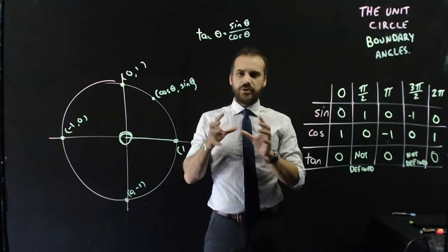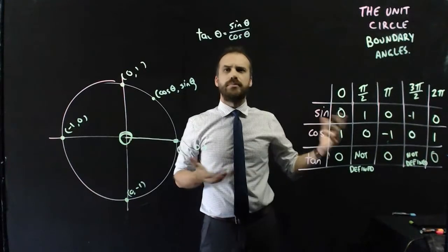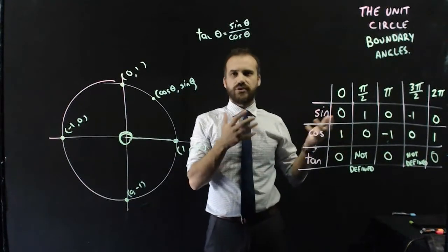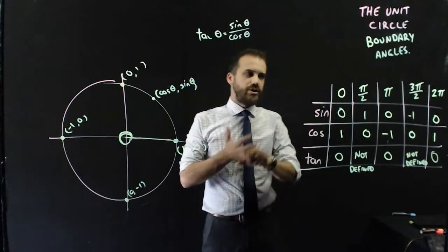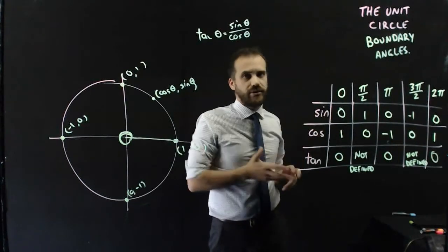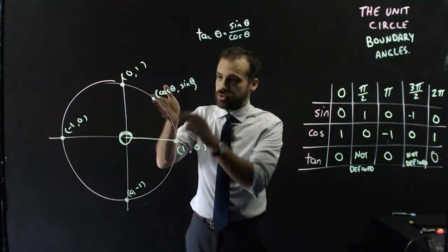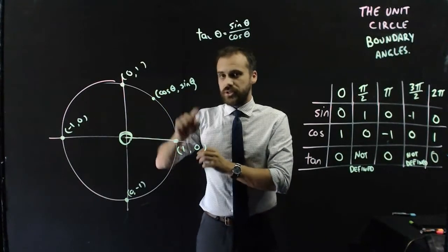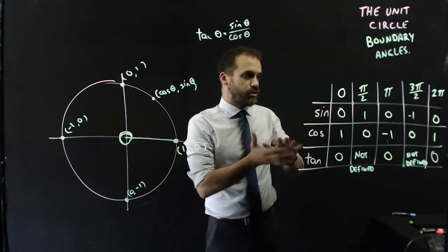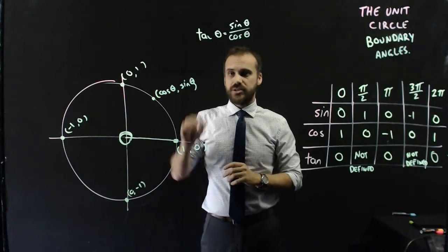what I really hope is that you've got all of the logic of that so you don't have to remember a table. You don't want to have to remember a table for 30, 45 and 60 degrees, you don't want to remember a table for your boundary angles, you really want to understand that the dot, the coordinates of the dot are cos theta and sin theta, and you're going to use that information to then be able to fill that table out logically and come up with those answers whenever you need them.